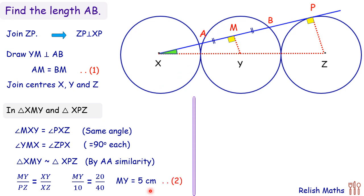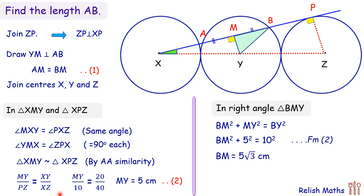Solving it further, now I am making a triangle BMY. In this triangle BMY, applying Pythagoras theorem. BM is what we have to find. MY is 5 centimeters. BY is nothing but the radius of the circle, that is 10 centimeters. We will put the values there and we will get the value of BM here, which is 5 root 3.